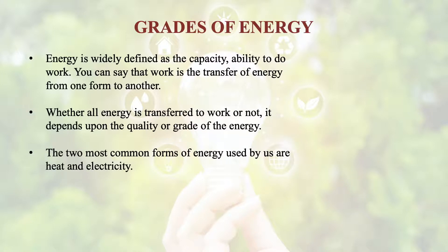The two most common forms of energy used by us are heat and electricity. Heat is generally known as the lower grade of energy and electricity is the higher grade of energy. Why? Because the major portion of electricity could be converted into work, but the major portion of heat is not converted into work. This is why we call heat as low grade energy and electricity as high grade energy. This grade of energy depends upon the quality of the energy that we are getting from it.